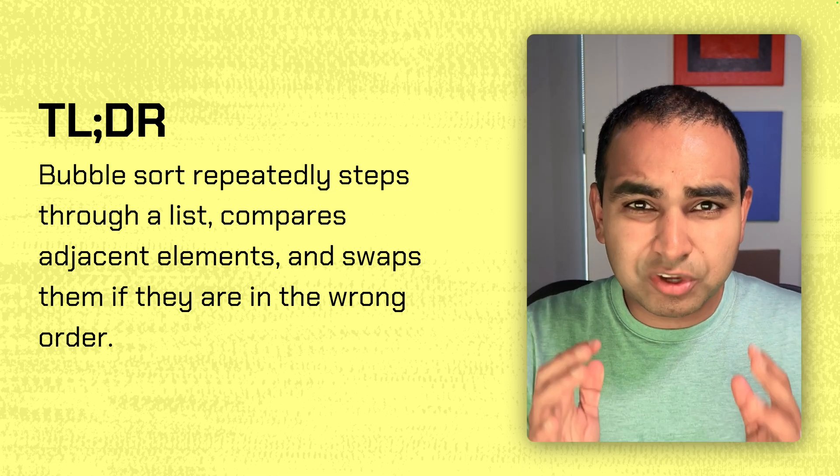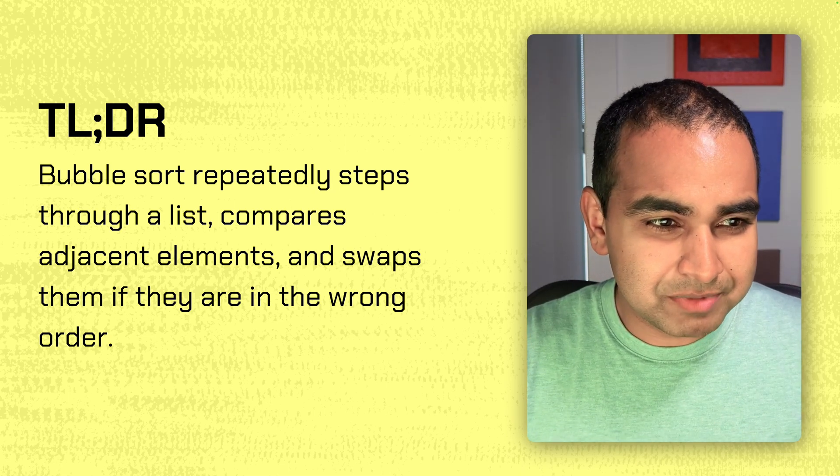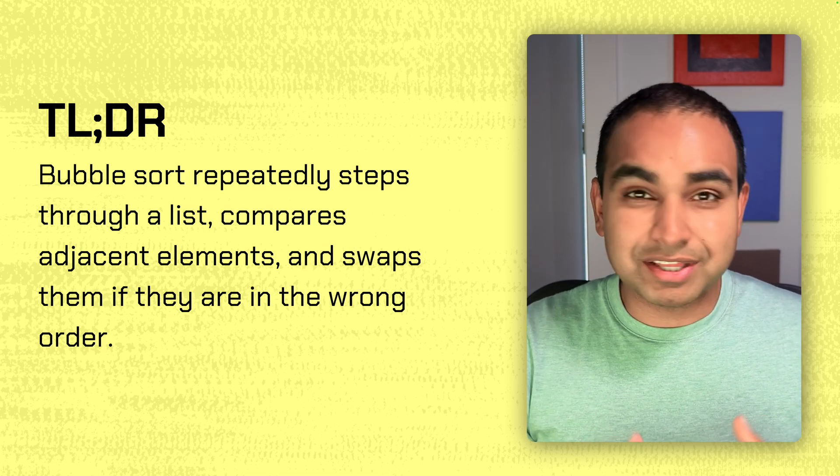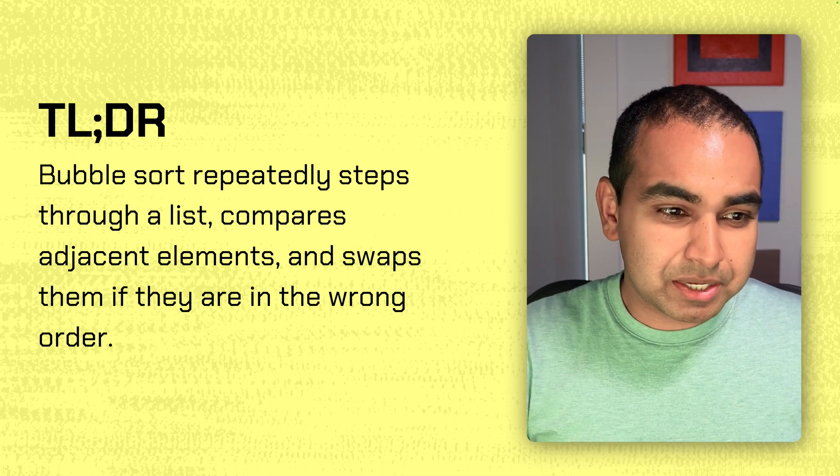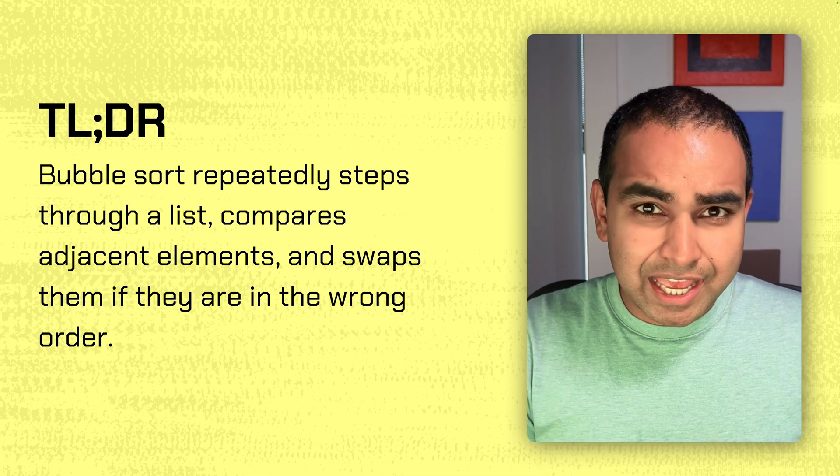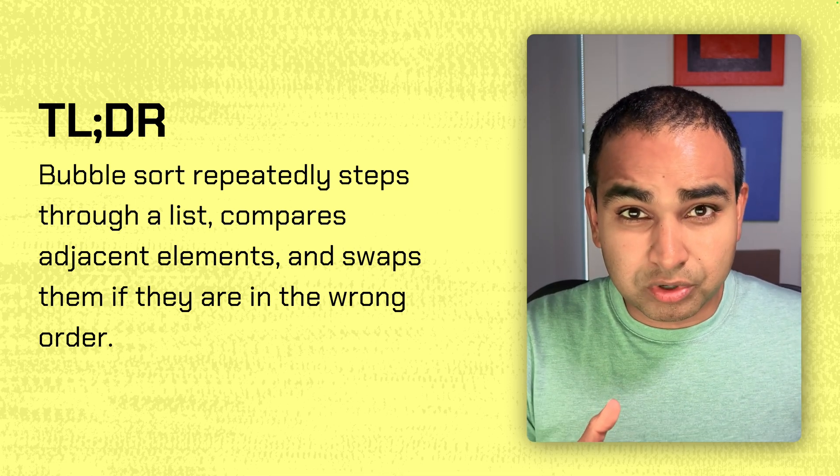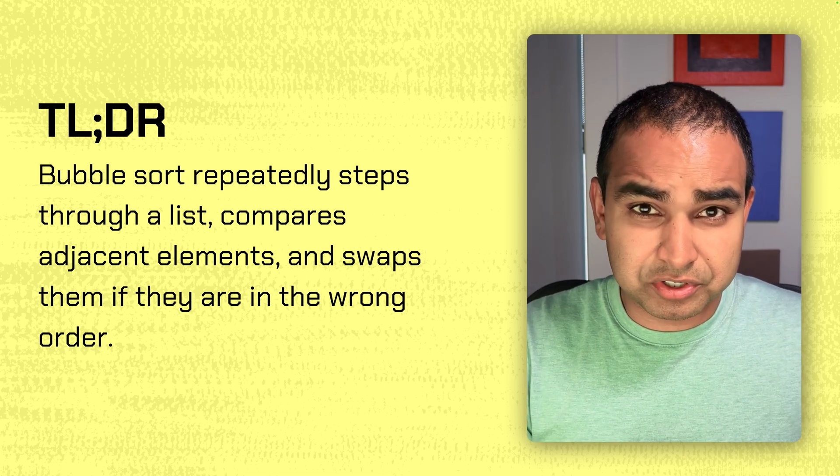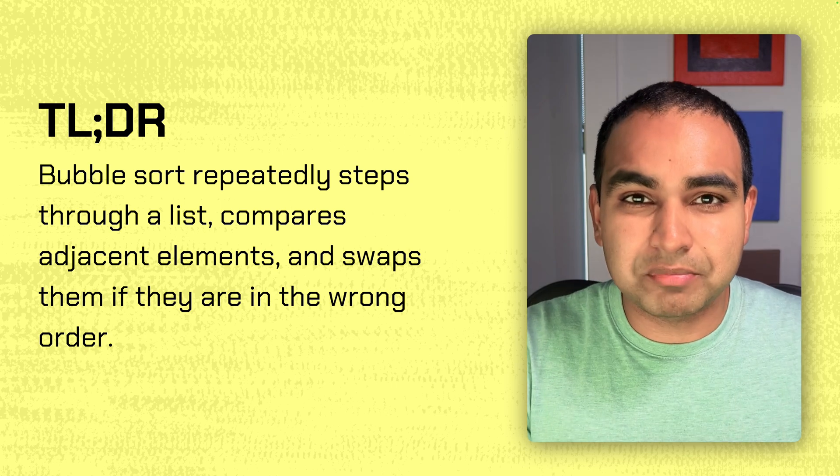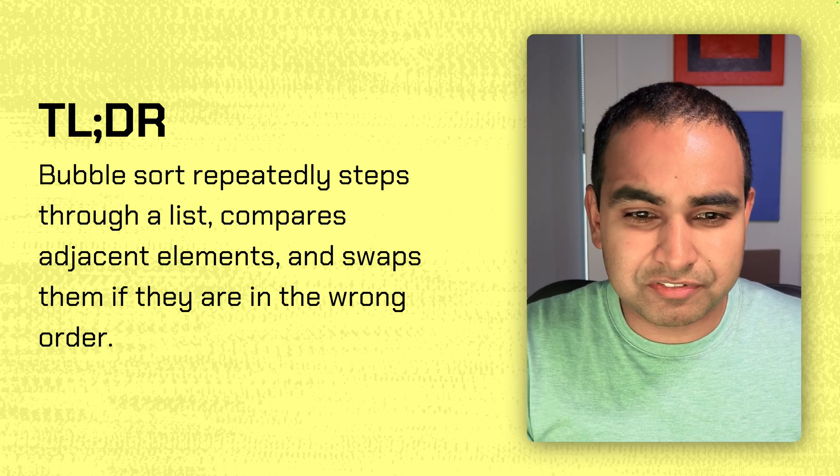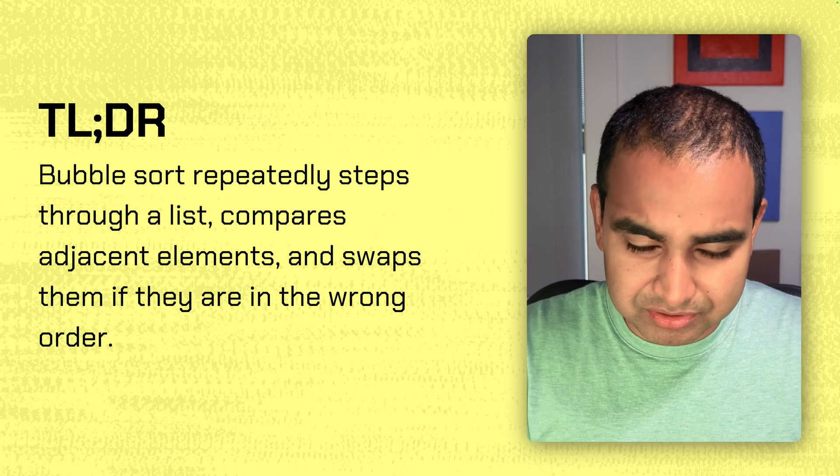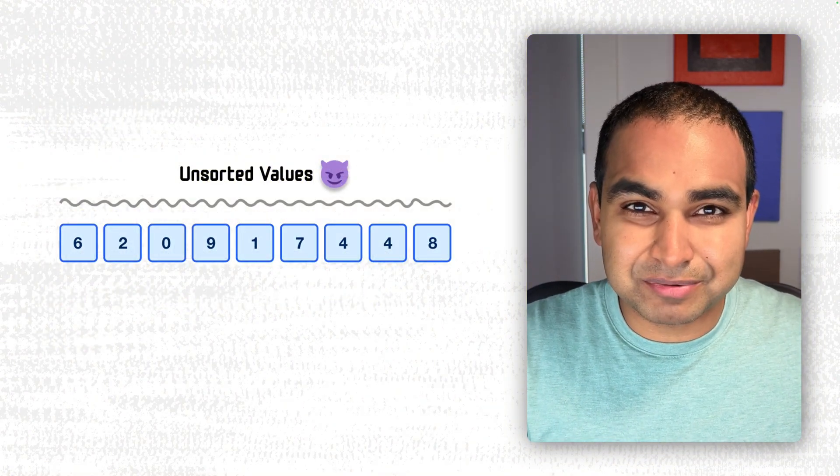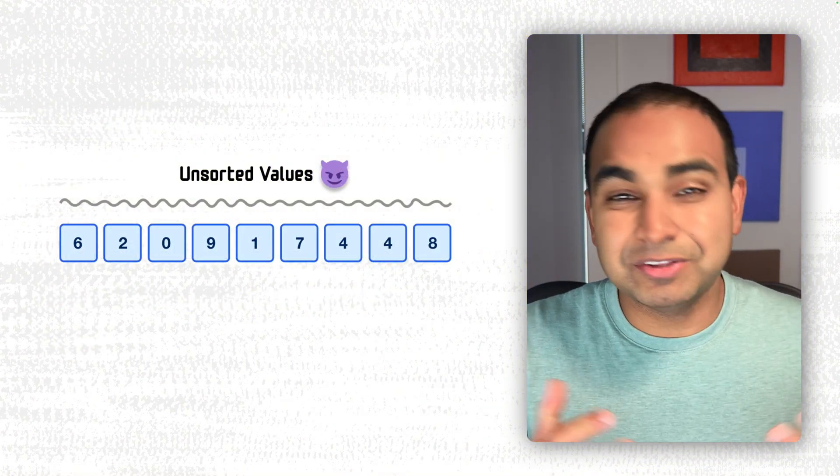If I had to very quickly describe how bubble sort works, it is as follows. Bubble sort repeatedly steps through a list or a collection of data. It compares adjacent elements and swaps them if they're in the wrong order. So if I'm comparing two values, the first value is larger, the second value is smaller, I would swap it to make sure the smaller value appears first. And this is assuming I'm sorting from smallest to largest. And the best way to, of course, put all those words into practice is to actually look at an example.